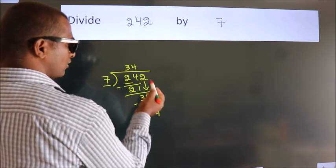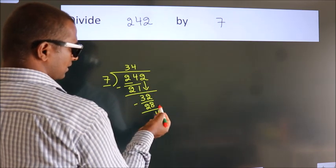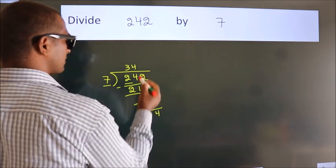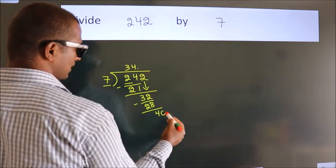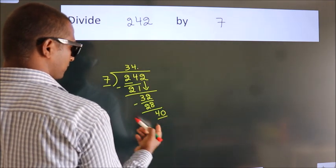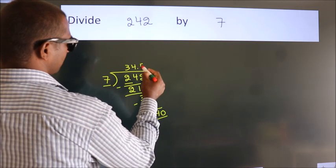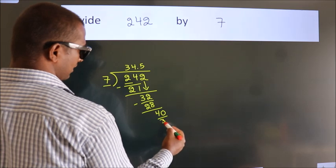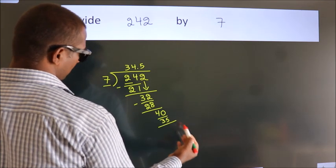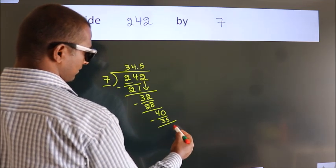After this, no more numbers to bring down. So what we do is, we put a dot and take 0. So 40. A number close to 40 in the 7 table is 7 fives, 35. Now we subtract. We get 5.